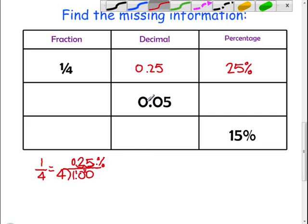Let's do the next one together. Decimal is 0.05. And I've got to do two things to it. I've got to turn it into a percentage and I've got to turn it into a fraction. So, to turn it into a percentage is easier. I simply move this decimal two places to the right and there is my percentage.